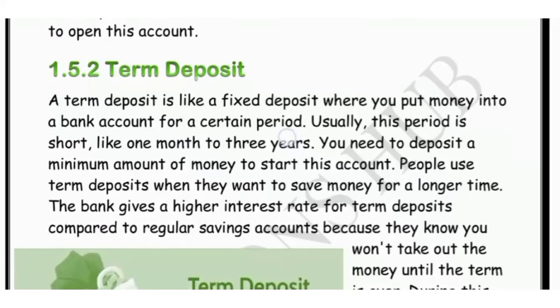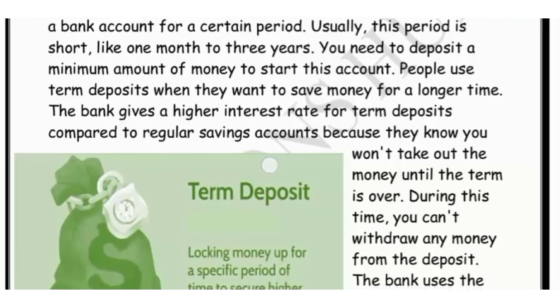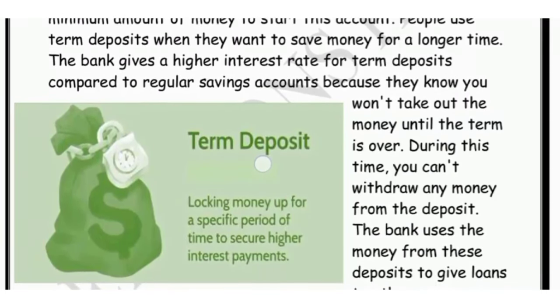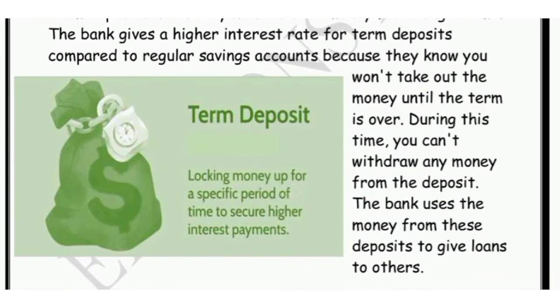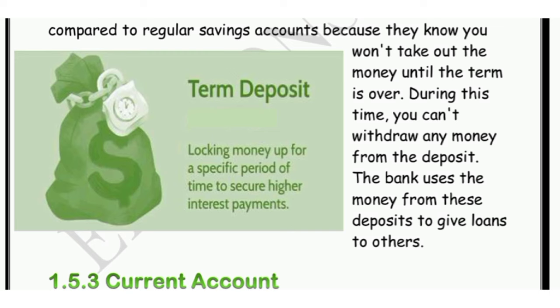Second hai term deposit. Yeh ek tarah ka FD jaisa hota hai jismein hum kuch money rakh dete hain certain period of time ke liye. Yeh period short bhi ho sakta hai - ek month se lekar 3 saal tak. Log is term deposit ko use karte hain taaki money ko lambe samay tak save kar sakein. Bank isme higher interest pay karti hai saving account ke comparison mein. Iska definition hai: locking money up for a specific period of time to secure higher interest payment. Beech mein kabhi bhi money withdraw nahi kar sakte.